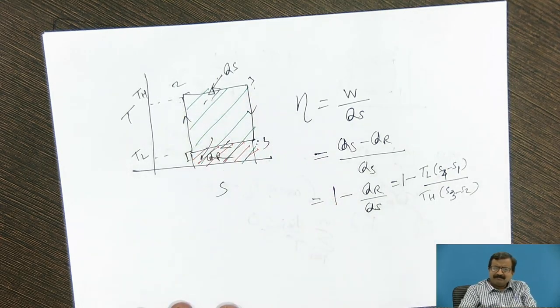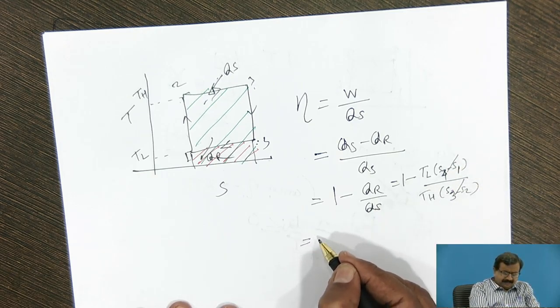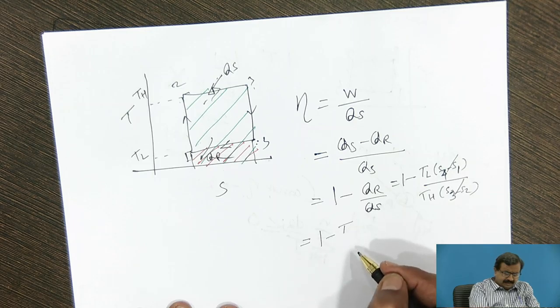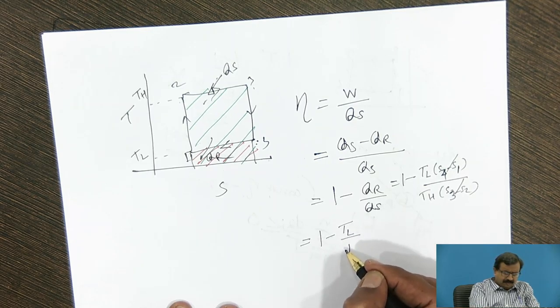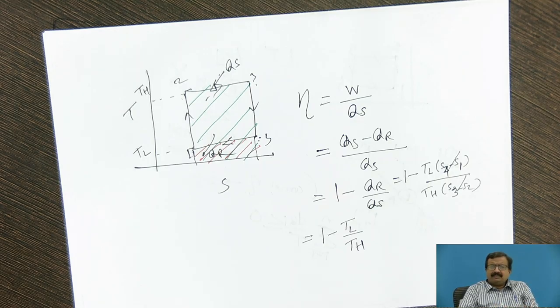Now, you know that S4 minus S1 and S3 minus S2, they are same because it is a rectangle. So I can cancel them. And what I get is equal to 1 minus TL upon TH. So 1 minus TL upon TH is the expression for efficiency of a Carnot engine.